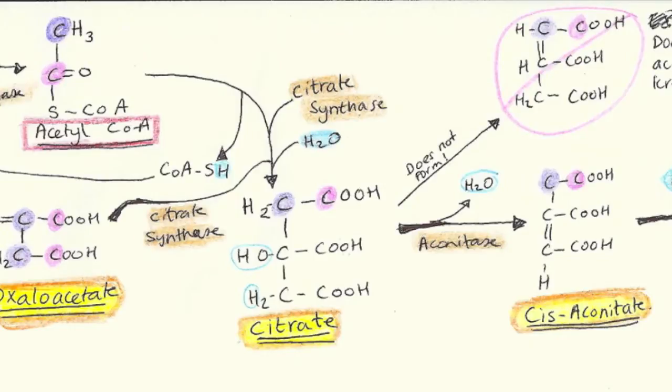Now that we have acetyl-CoA, we can officially move on into the Krebs cycle. Acetyl-CoA and oxaloacetate both react with the help of the enzyme citrate synthase to create the first molecule in the Krebs cycle, which is citrate. Coenzyme A is re-synthesized and can turn more pyruvate into acetyl-CoA.